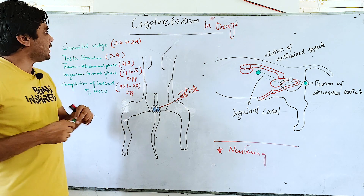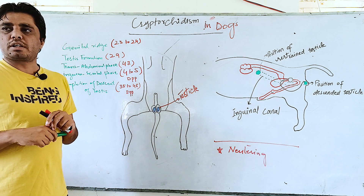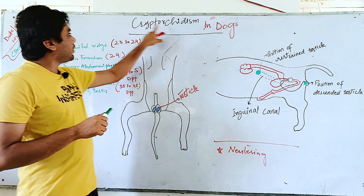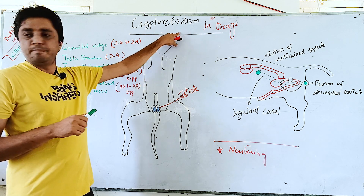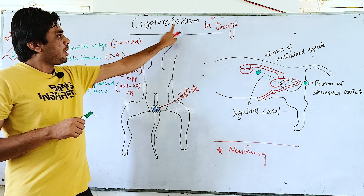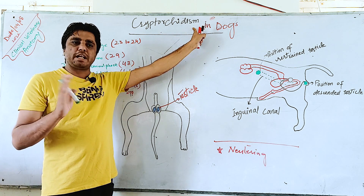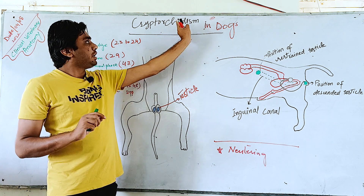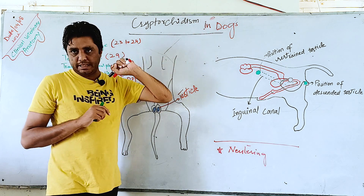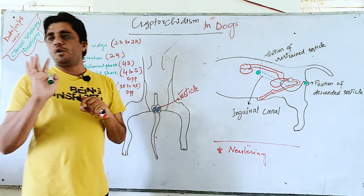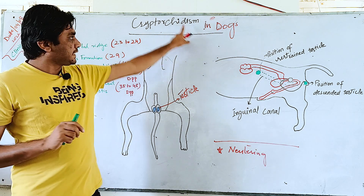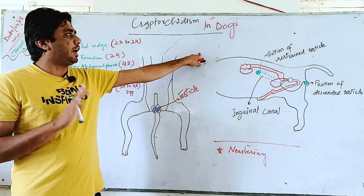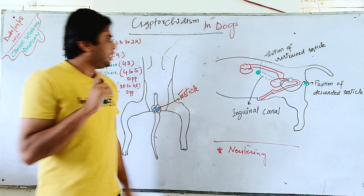Today we are going to discuss one of the clinically important cases in dogs: cryptorchidism. If you are a veterinarian working especially in any pets clinic, you will see so many cases of cryptorchidism in dogs. We are specifically going to understand what this is and how it happens in dogs and what factors are involved.